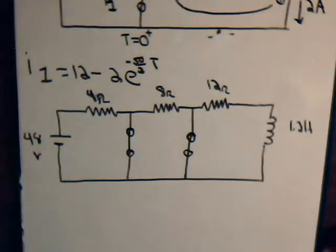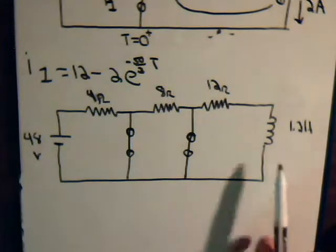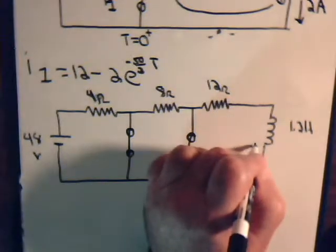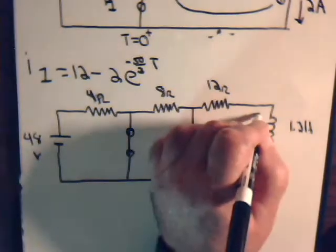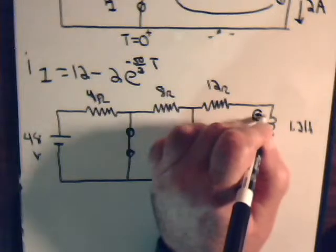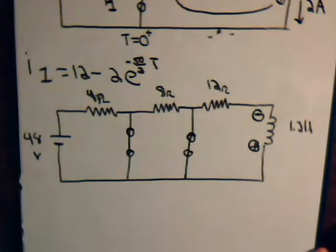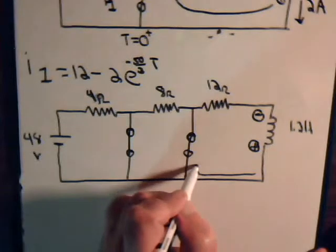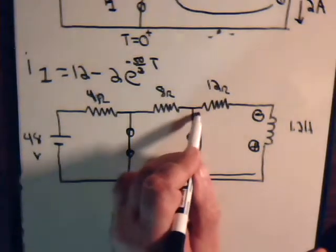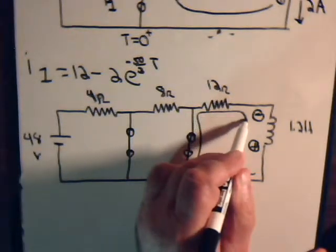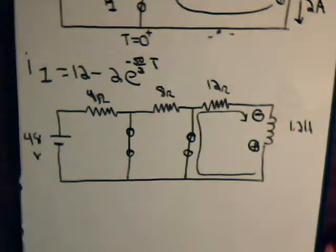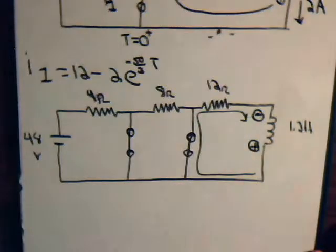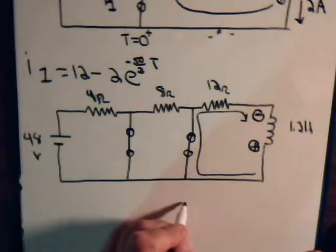Here there will be a decay current as there was before. There will be an induced voltage from the collapsing magnetic field of this polarity. And now the decay current goes like this, right straight through this conductor, through this resistor. So now the decay current for this particular circuit is going to be...